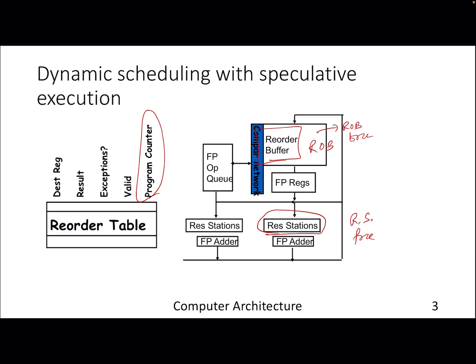What exactly does the reorder buffer store? It stores the program content, which is the instruction itself. It has a valid/invalid bit to indicate whether this is a speculative instruction or not. It also records any exceptions associated with a particular instruction, and finally the result value — for example, if it is a value from memory. The ROB does similar things as the reservation station, but on top of that it handles speculative operations.